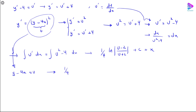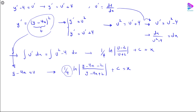Replacing u with y minus 4x, the solution becomes (1/4) ln|(y minus 4x minus 2)/(y minus 4x plus 2)| equals x plus c. You can write ln of c to simplify, but we keep it as is. Now you can multiply the whole equation by 4 and simplify further to complete the solution.